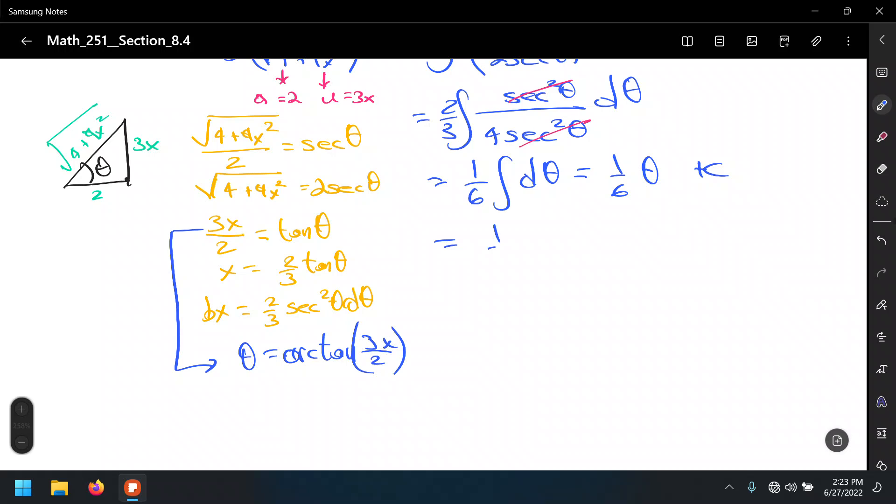Which is simply one-sixth arc tan of 3x over 2. You've seen it, the same result using simply the arc tan rule.